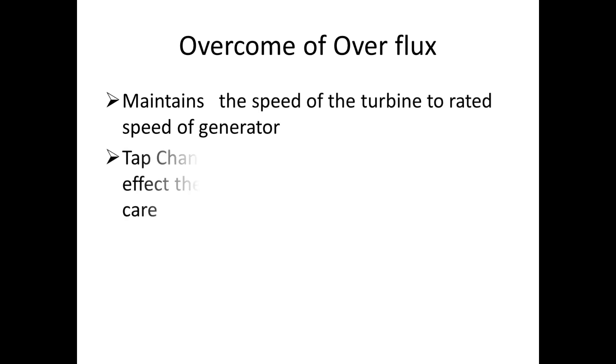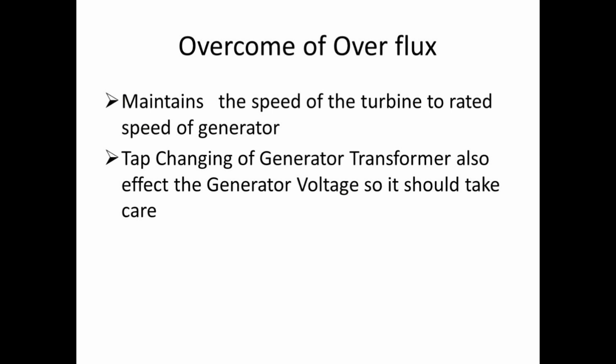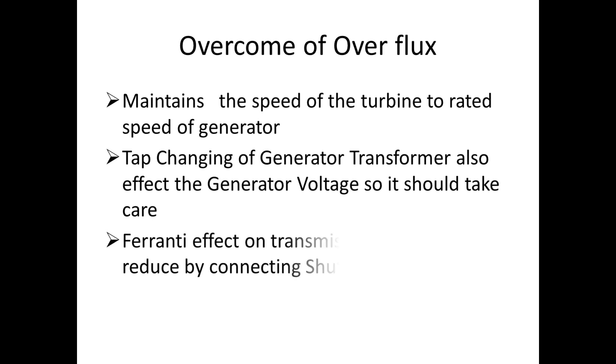First, to maintain the speed of turbine to the rated speed of generator. Second, the tap changing of transformer also affects the generator voltage, so it should be taken care. Third, the Ferranti effect of transmission line has to be reduced by connecting shunt reactor.